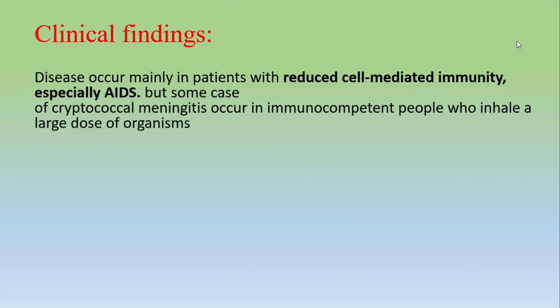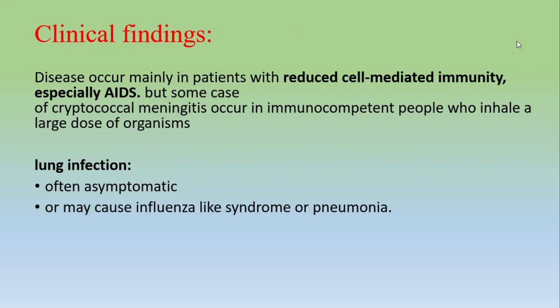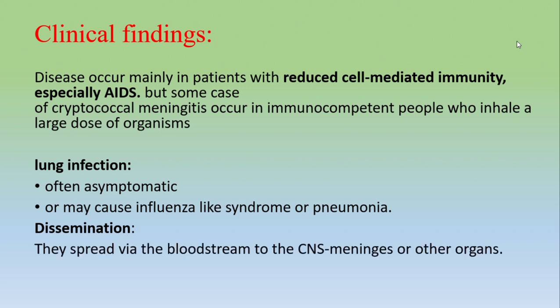Clinical findings: disease occurs mainly in individuals with reduced cell-mediated immunity, especially AIDS patients. However, cryptococcal meningitis can also occur in immunocompetent people who inhale a large dose of the organism. Lung infections are the major presentation — often asymptomatic but may cause an influenza-like syndrome or pneumonia. The infection can then disseminate through the bloodstream to the CNS and other organs.